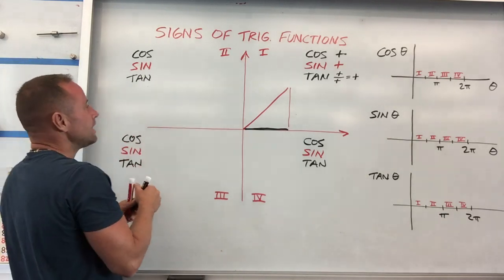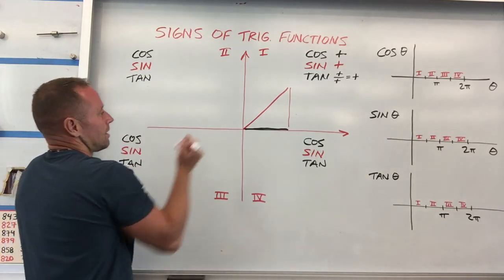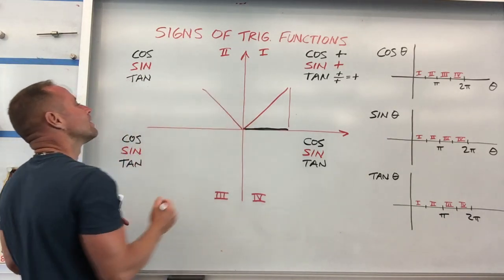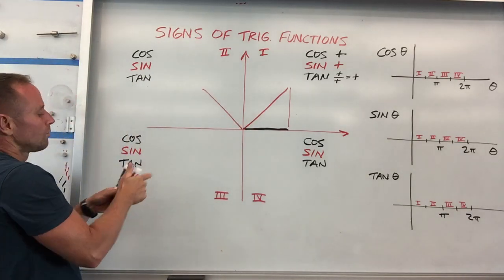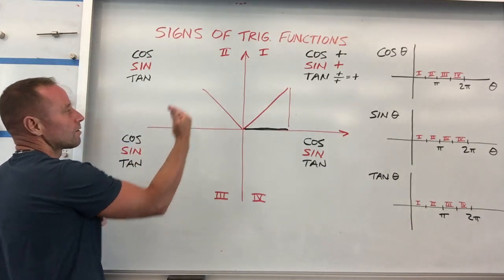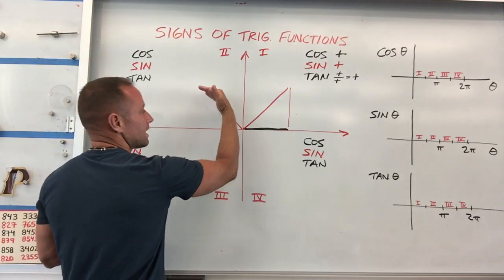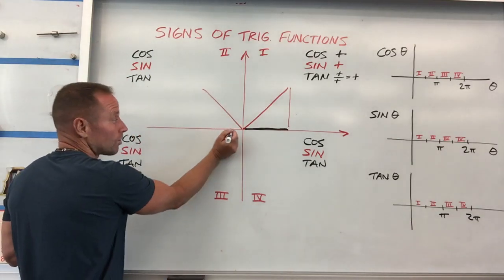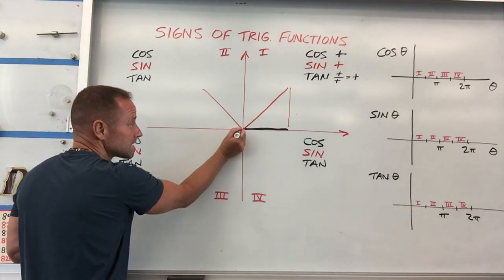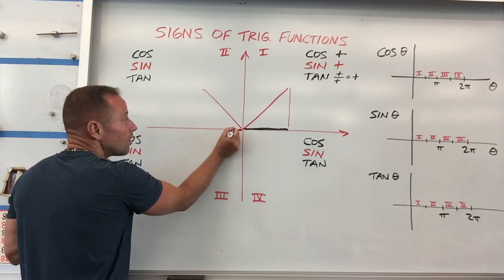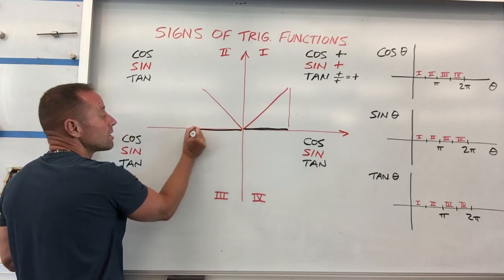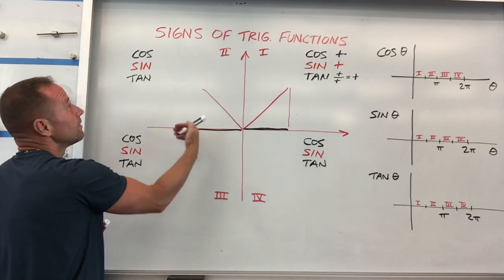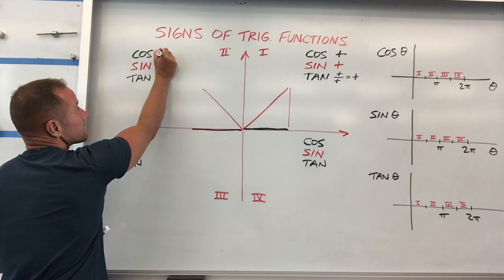If you come over here, you've cranked over to some angle like this — what's going on with cosine? Cosine takes the projection down onto the horizontal axis. So your cosine is now going to be negative — you're here along the negative x-axis.